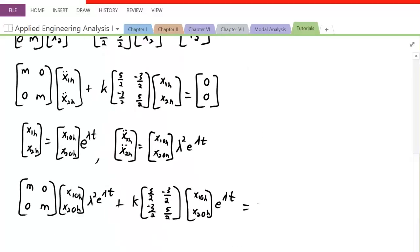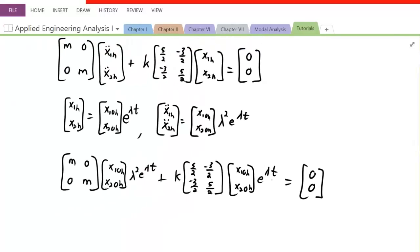Alright, so this will still equal 0, 0. That's why it's homogeneous in the first place. So we can divide both sides by e to the lambda t to cancel these out. If we divide by e to the lambda t, those both go away, and the identity is left the same.